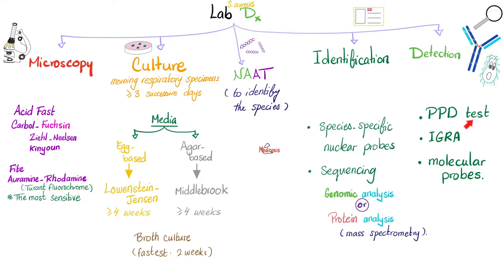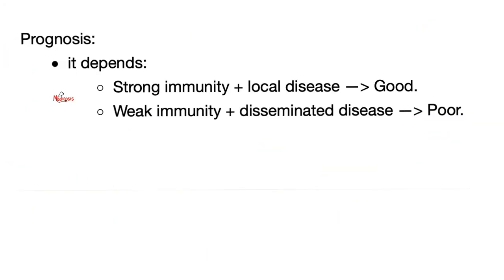For detection, you have the PPD skin test to detect the granuloma or induration. We have the interferon gamma release assay, the QuantiFERON, and molecular probes. Regarding prognosis: if your immunity is strong and the disease is local, you have a good prognosis. If your immunity is poor and the disease is all over the place — miliary tuberculosis — the prognosis is poor.